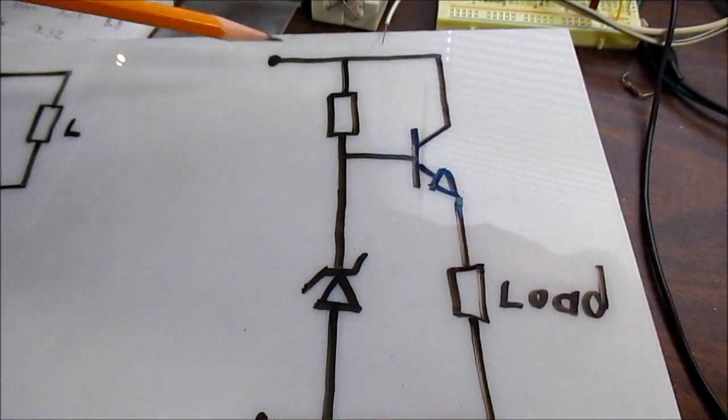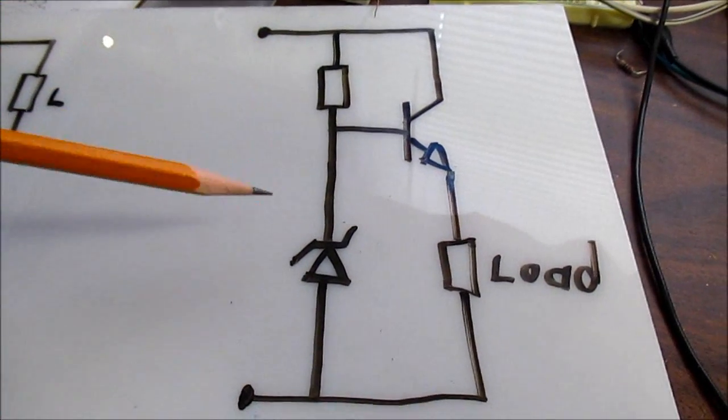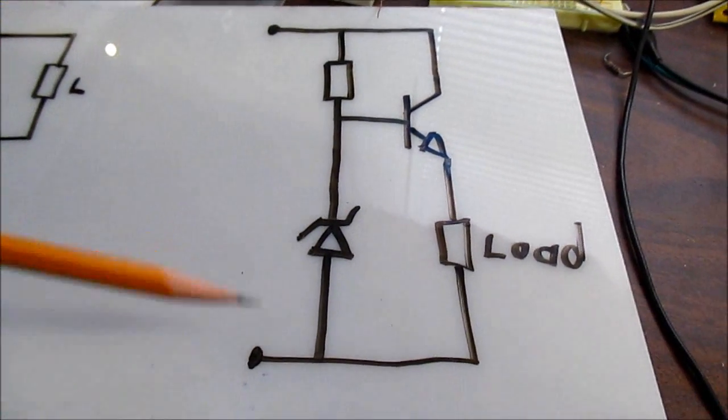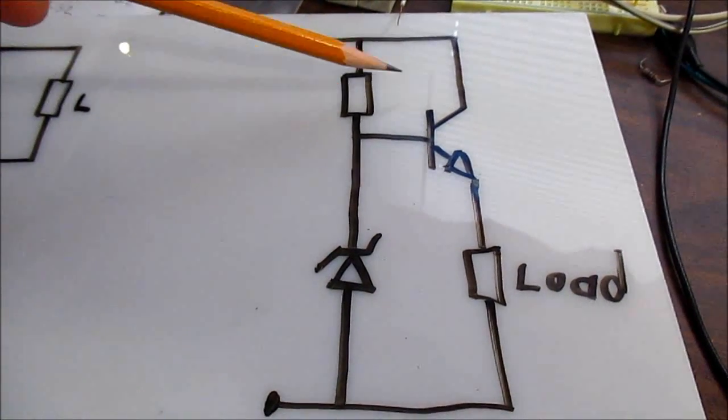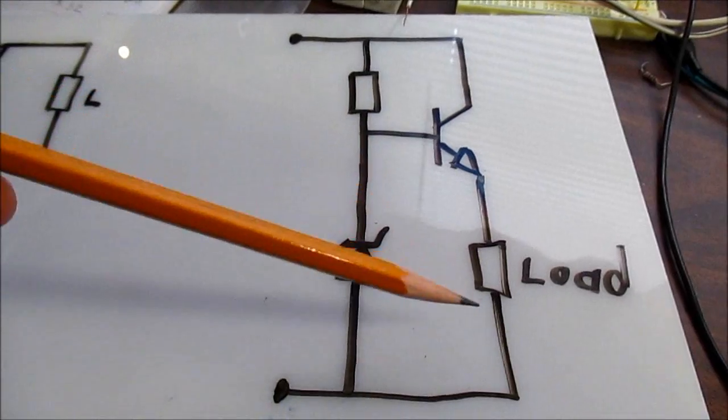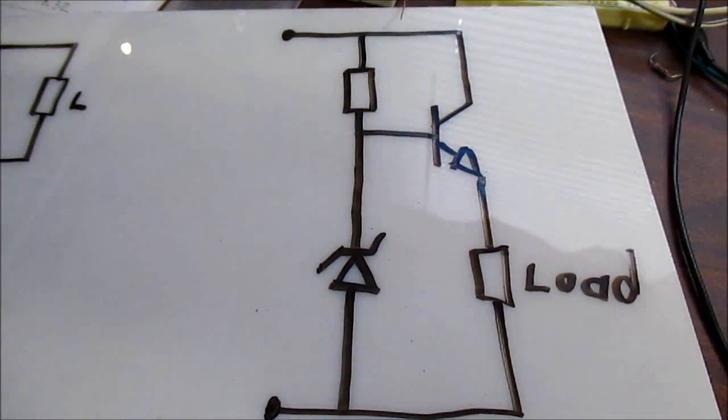I laid it out vertically here. It's the same exact circuit. I just think it's easier to understand this way because you have your zero potential here, your supply voltage here, and the decreasing potential as you go through the components in the circuit.